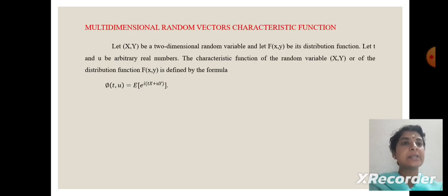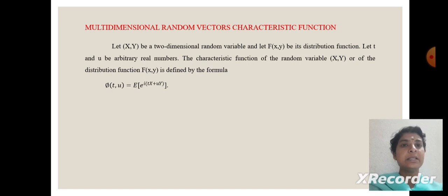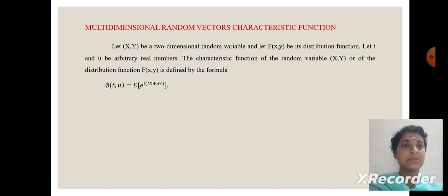Multi-dimensional random vector characteristic function: let x, y be the two-dimensional random variable and let f of x, y be its distribution function. Let t and u be arbitrary real numbers. The characteristic function of random variable x, y or of the distribution function f of x, y is defined as pi of t comma u equal to expectation of e power i of tx plus uy.